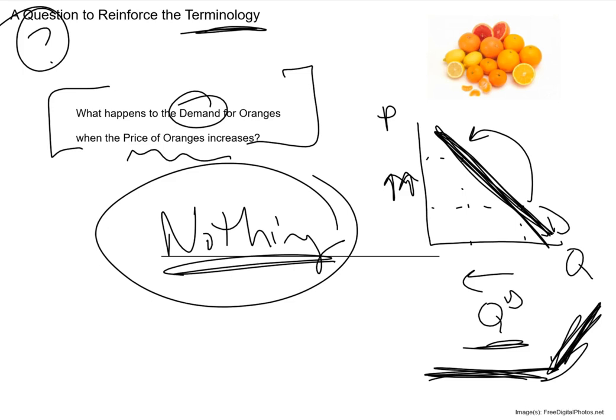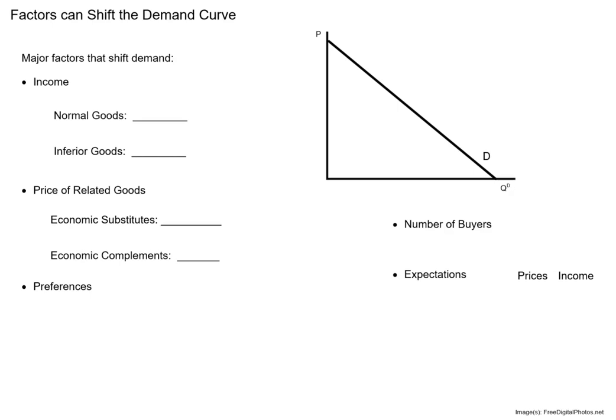Other things can shift that demand curve. Remember that the demand curve represents buyers wanting to buy a product, so anything other than price that influences consumer behavior — either pushing consumers towards a market or away from a market — can shift demand. We've got five different factors that could shift the demand curve. The first big one in many markets is income. Income can drive consumer behavior in a lot of markets. When we talk about the role of income, we have two terms: normal goods and inferior goods.